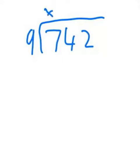8 nines are 72. Put an 8 there. You need another 2 to go from 72 to 74. That means I put the 2 over here. 9 into 22. It's 2 times. With 4 remainder.